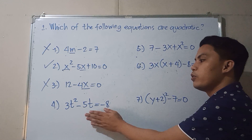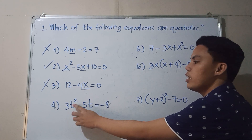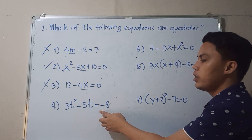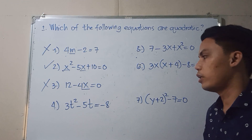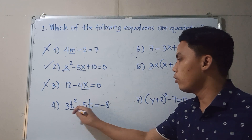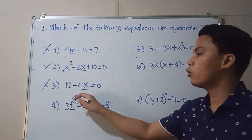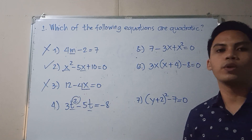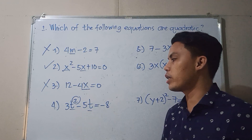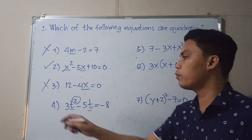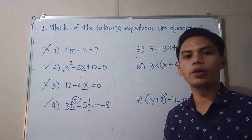How about number 4? We have 3t squared minus 5t is equal to negative 8. The variable has a highest degree of 2. Since the highest degree is 2, therefore number 4 is a quadratic equation.